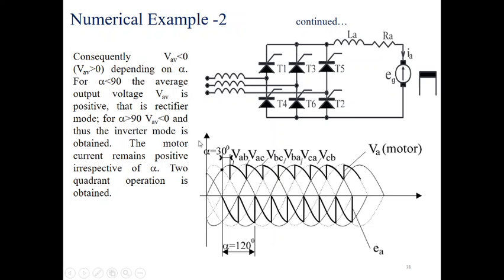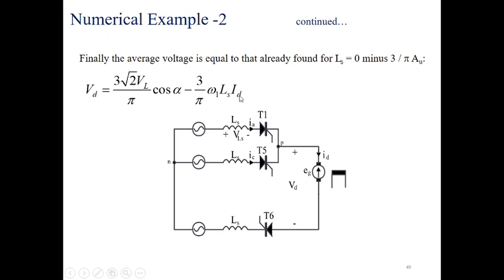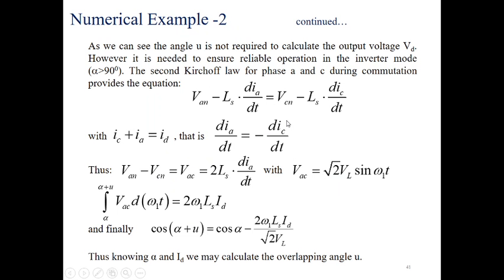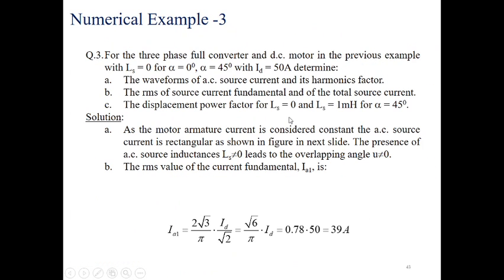Now we can see the effect of source inductance. The voltage drop due to source inductance is three upon pi times omega L_s times I_dc. The fundamental current component is also shown here.